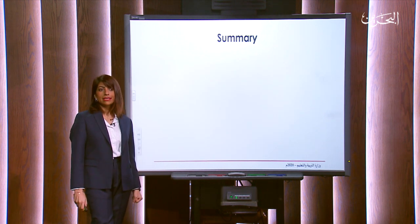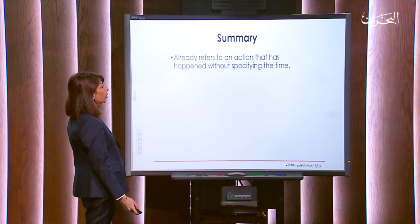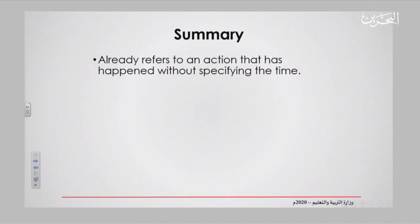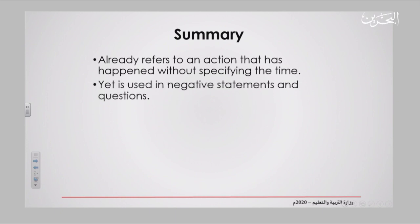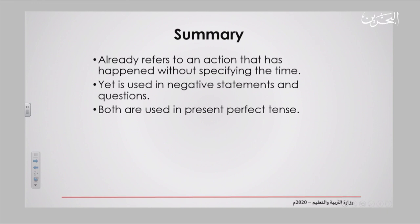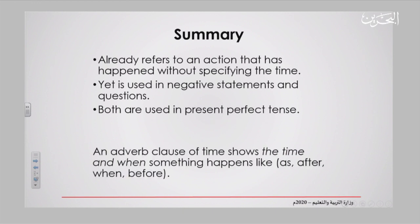Let's go to the summary of today's lesson. 'Already' refers to an action that has happened without specifying the time. 'Yet' is used in negative statements and questions. Both are used in present perfect tense: subject + have/has + past participle form of the verb. 'Yet' always comes at the end; 'already' can come in the middle or at the end. An adverb clause of time shows when something happens, using words like 'as', 'after', 'when', and 'before'.